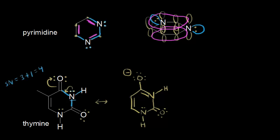Now let's analyze the nitrogen after drawing the resonance structure. For this nitrogen, there are three sigma bonds and now no lone pairs of electrons. So the steric number equals 3 + 0 = 3, meaning this nitrogen is sp2 hybridized and now has a p orbital. The lone pair that was on the nitrogen is no longer localized there — it is delocalized and can now participate in resonance.